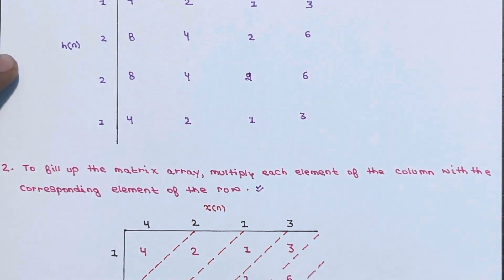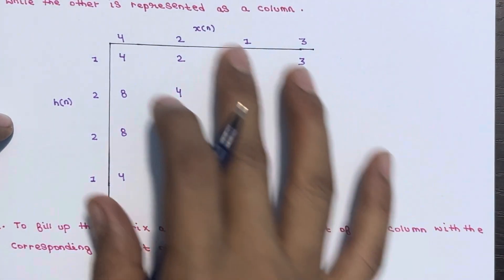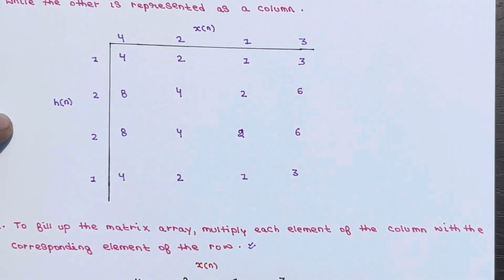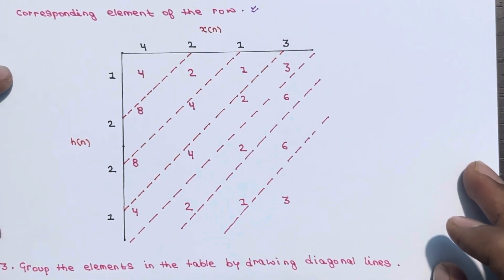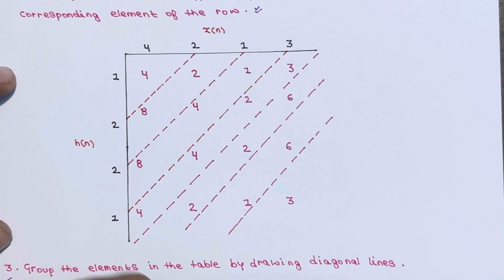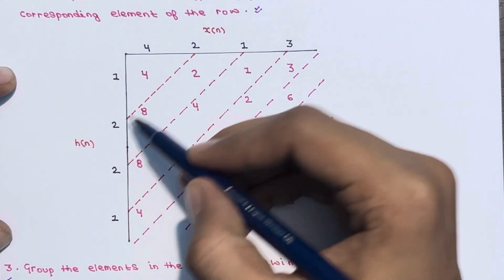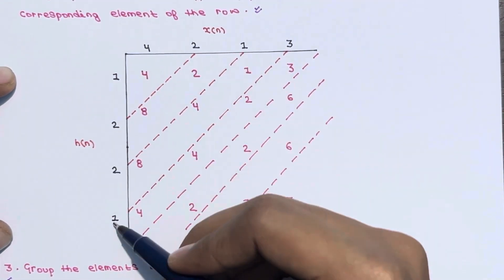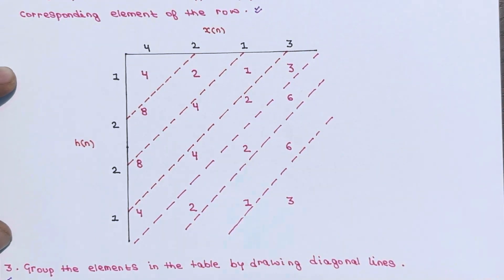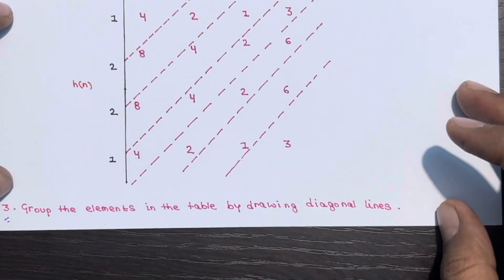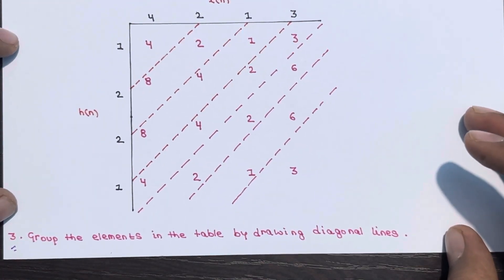In step 3, group the elements in the table by drawing diagonal lines. The diagonal lines are drawn and the elements are grouped accordingly.